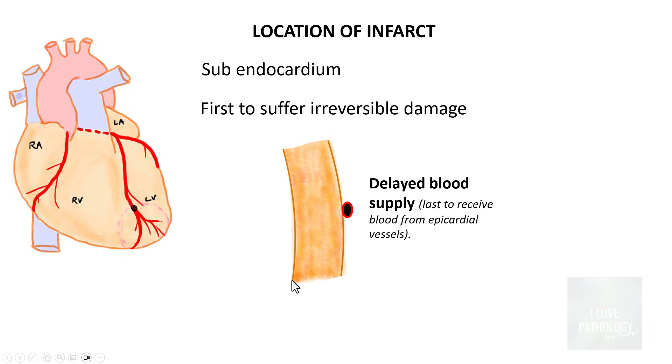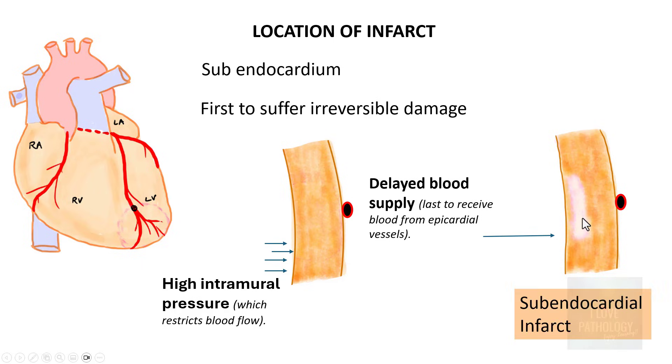The reason for that is the subendocardial tissue is the last to receive the blood from the epicardial blood vessels. The second important reason is that there is high intramural pressure which basically restricts the blood flow.